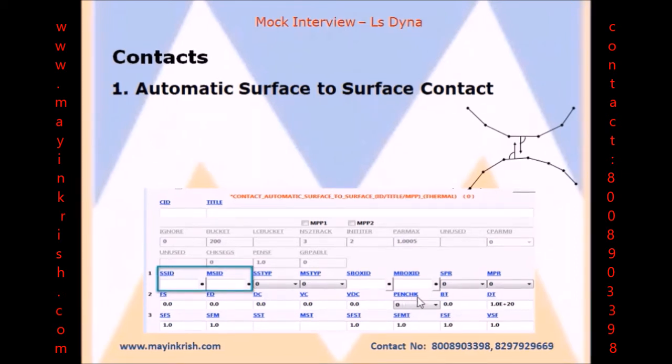Penetration Check will search small penetrations in contact if you are setting value to 1. BT stands for Birth Time when contact surface becomes active, DT for Death Time when contact surface is deactivated.